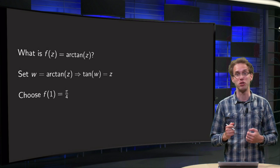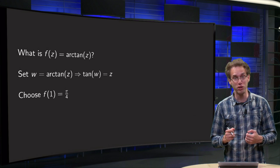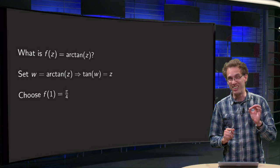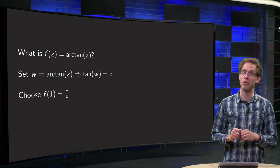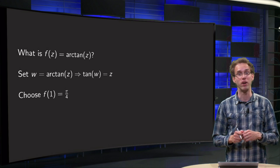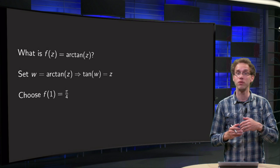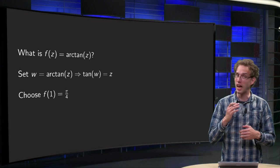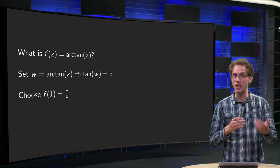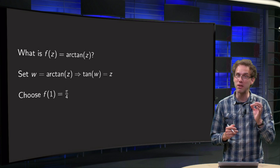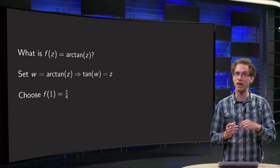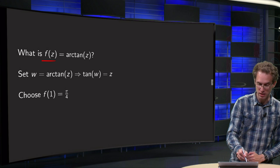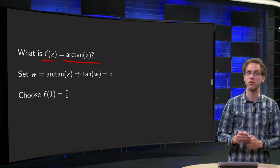We can rewrite them in terms of other functions, but we have to be really careful when doing so, as you will see in this example, where we will discuss the complex arctangent function, which is actually a bit easier than the arcsine and the arccosine, but even here we have to be really careful. So we want to know what is f of z, the arctangent of z.